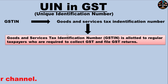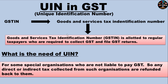So when we have GSTIN, why do we need UIN? There are many cases where we cannot allot a GSTIN. For those cases, we need a Unique Identification Number. For example, there are many special organizations that do not have to collect GST. If they purchase something and have to pay GST, they don't collect that tax — instead, they get a refund of it.